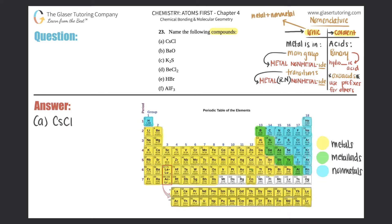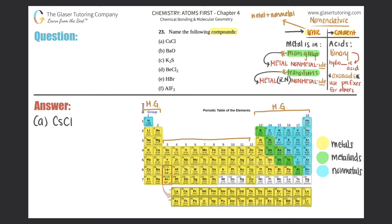Covalent compounds are all non-metals. So here we have a metal and a non-metal, meaning it's ionic. Now there are two rules to worry about: whether your metal is a main group metal or a transition metal. Main group metals are in groups 1 and 2, and groups 13 through 18. Groups 3 through 12 are your transition metals.